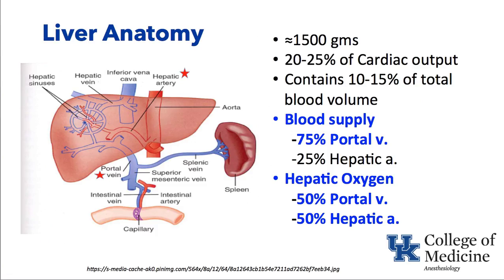Let's start right in on liver anatomy. The liver is huge — it's 2% of our body weight, approximately 1,500 grams, and receives about a quarter of the whole cardiac output. The liver itself contains a lot of blood, about a liter, and that's quite evident when you do liver surgery. We prepare patients well for potential blood loss when we know that the surgeons are working on the liver.